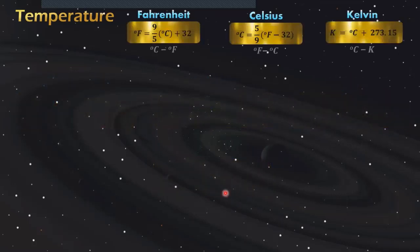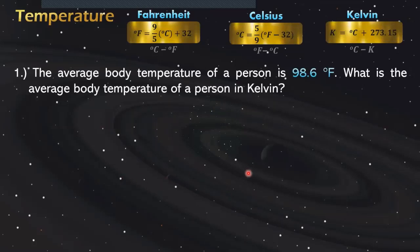Let's have an example. Number one: The average body temperature of a person is 98.6 degrees Fahrenheit. What is the average body temperature of a person in Kelvin? First, we identify what is unknown in the problem to know what formula to use. Since Kelvin is unknown, we are going to use this formula.